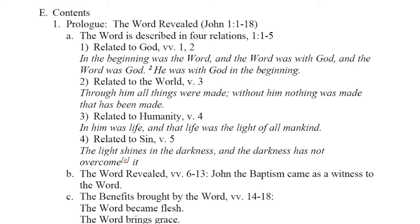Now let's look at the contents more closely. At the beginning, John reveals Jesus to be the Word of God. The Word is described in four relationships in verses 1 to 5. First, related to God in verses 1 and 2: 'In the beginning was the Word, and the Word was with God, and the Word was God. He was with God in the beginning.' Second, related to the Word in verse 3: 'Through Him all things were made, and without Him nothing was made that has been made.' Verse 4, related to humanity: 'In Him was life, and that life was the light of mankind.' And finally, related to sin in verse 5: 'The light shines in the darkness, and the darkness has not overcome it.'